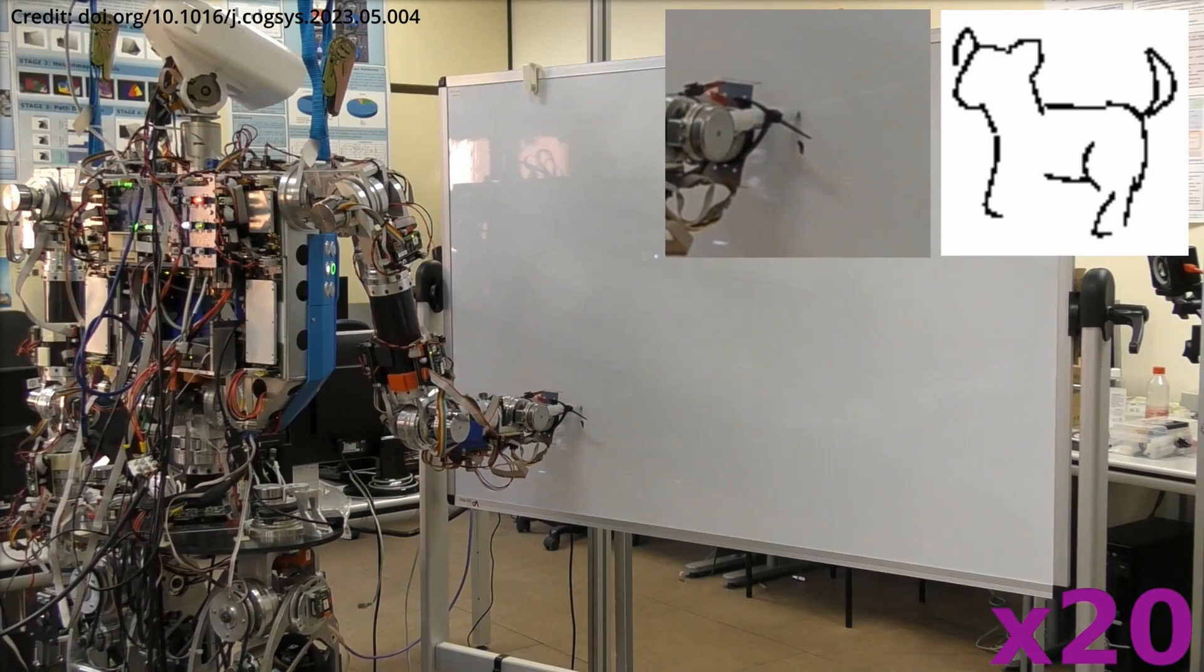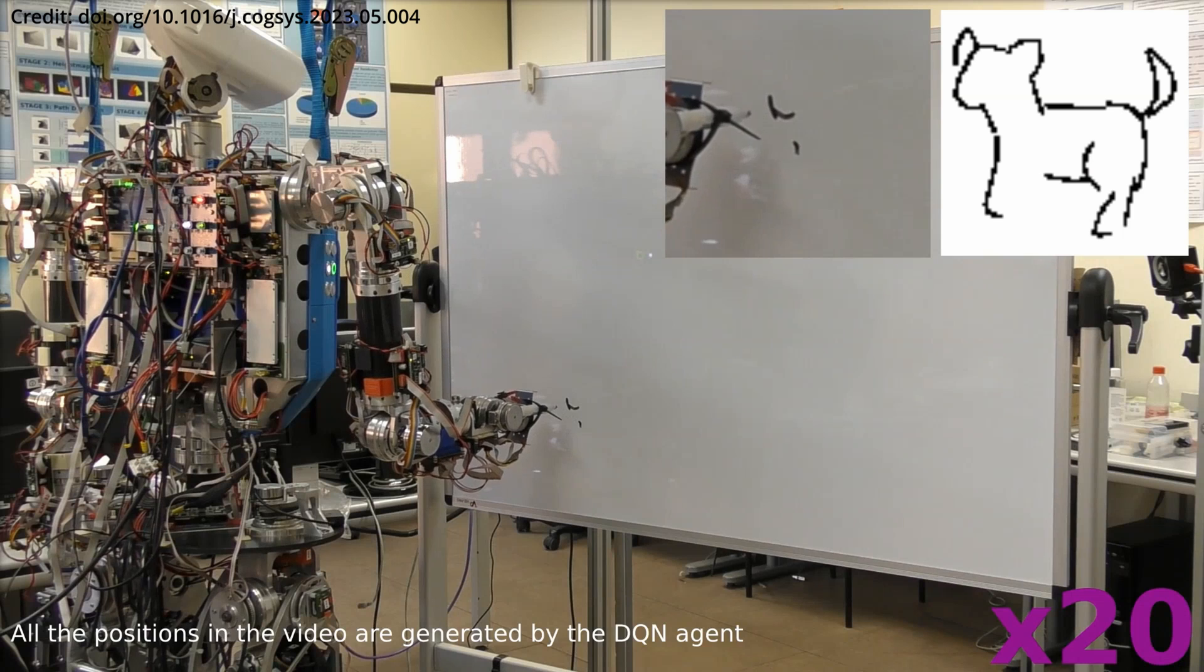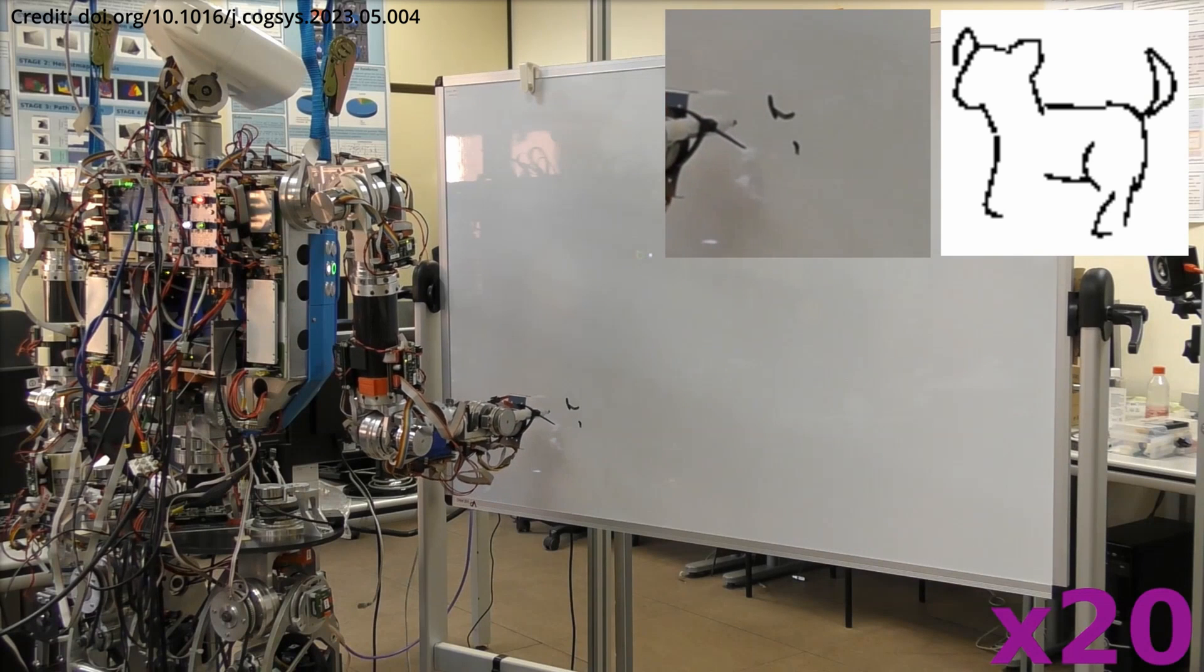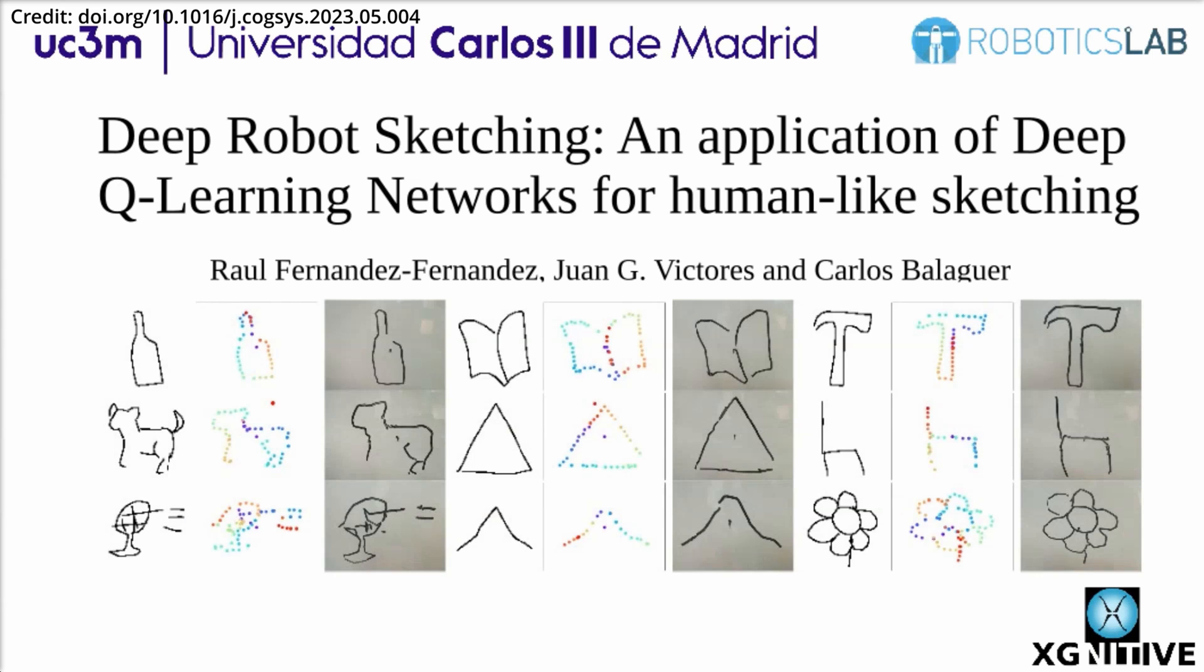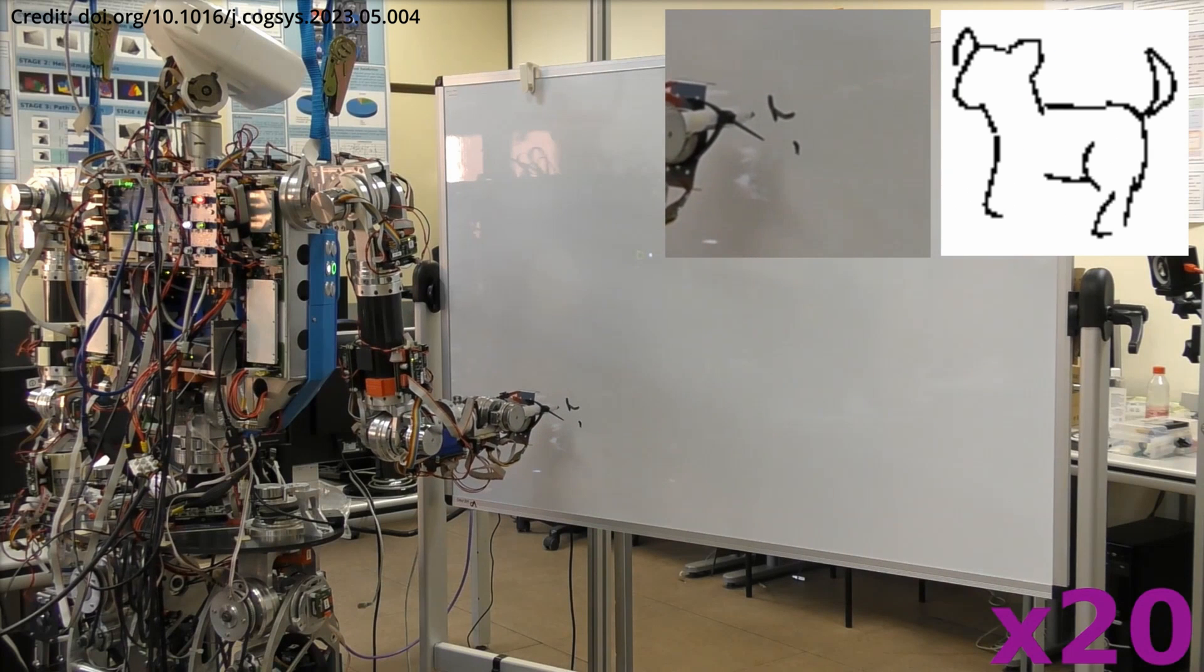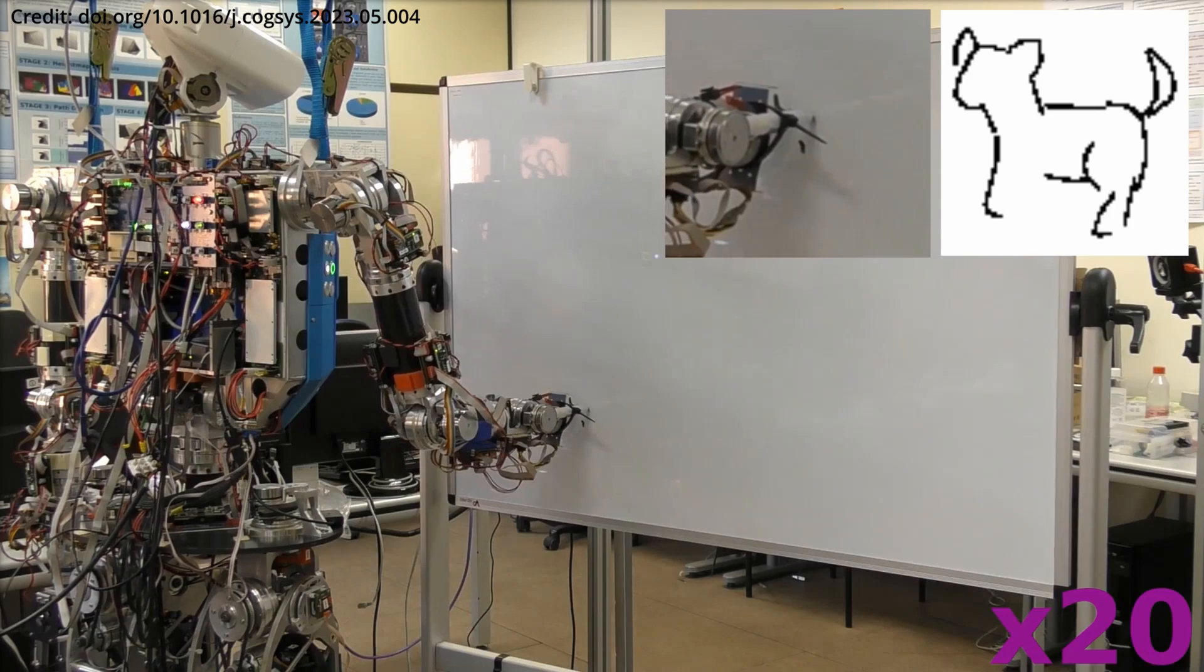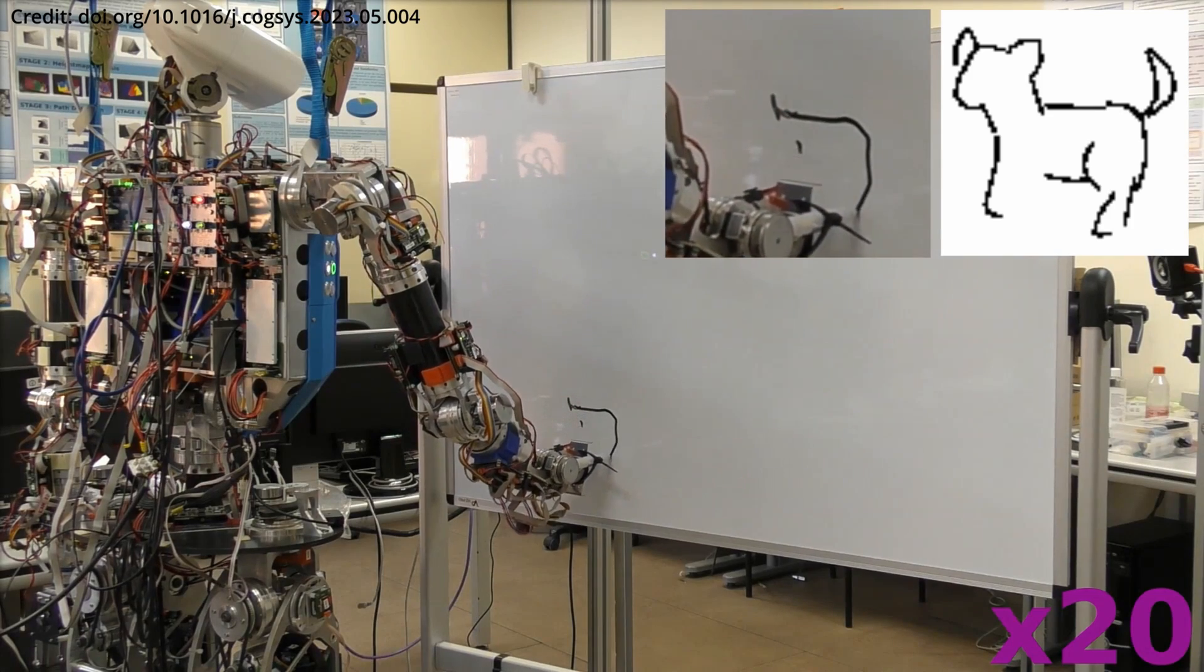And robot dexterity is also being flaunted by a new humanoid robot capable of real-time sketching, mirroring the nuanced approach of human artists. This advancement, detailed in cognitive systems research, marks a significant leap beyond traditional AI-generated art, bringing the creative process into the tangible world through robotic innovation.